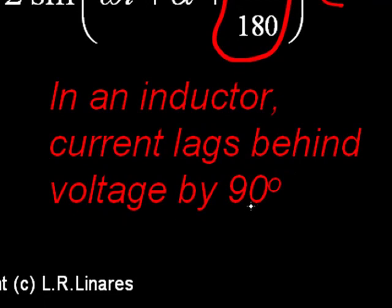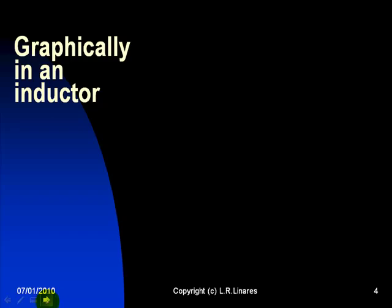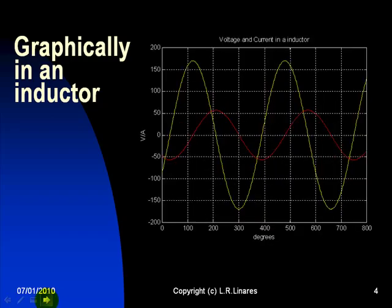Let's see that on the oscilloscope. Graphically, in an oscilloscope, this would be the voltage, and this would be the current. And we see that the current reaches its peak 90 degrees after the voltage.